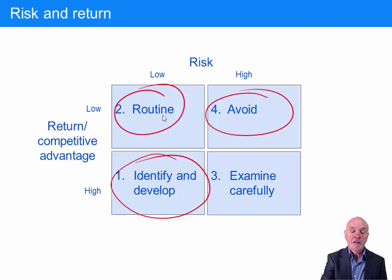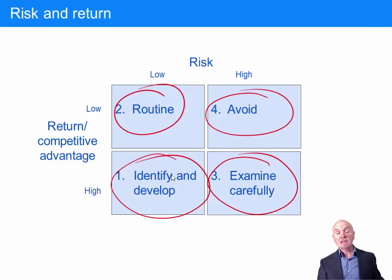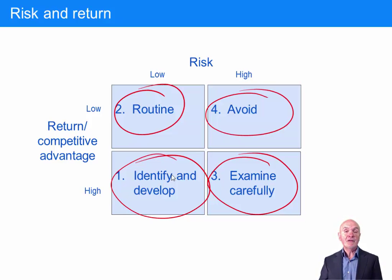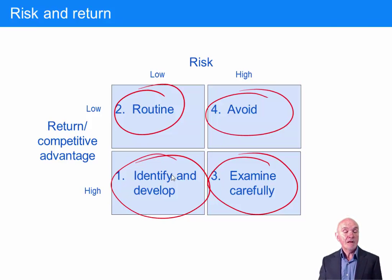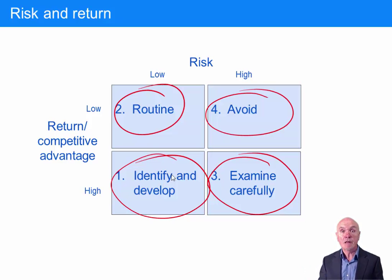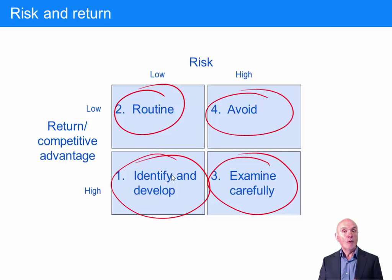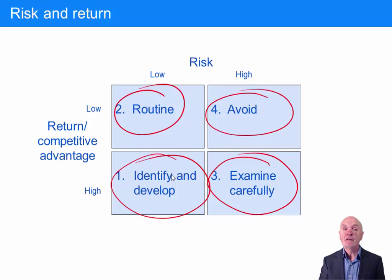The final quadrant — high risk and high return — is where you're in a bit of a quandary, not quite knowing what to do. This is the sort of opportunity that might keep you awake at night. For example, should we try to develop a fantastic new website? There's a high risk it doesn't work as well as you thought, but if it does work you could be attracting a worldwide audience. Generally speaking, you would be anxiously trying to collect more and more information to guide you on the risk and return before making the final decision.